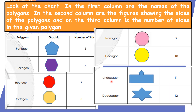And we have undecagon — undecagon has eleven sides. Let us check: one, two, three, four, five, six, seven, eight, nine, ten, eleven. Complete — eleven sides for undecagon.